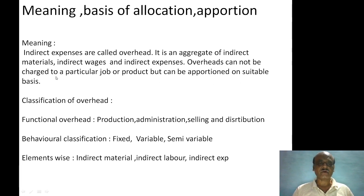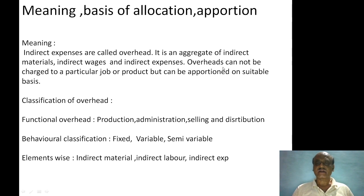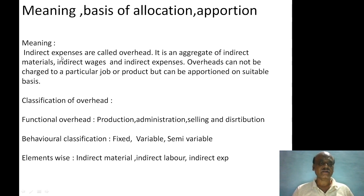This is an important characteristic or feature of overhead. It means that direct expenses can be charged directly to a particular product, particular job or centre. But overhead cannot be charged directly to a particular product or particular job — it needs apportionment and allocation. That is the key characteristic of overhead.